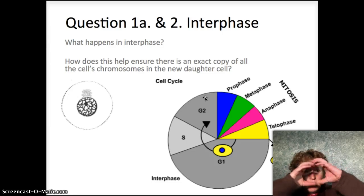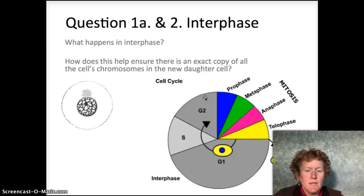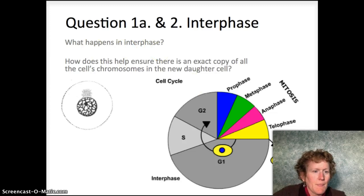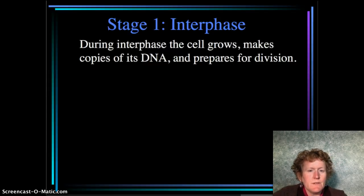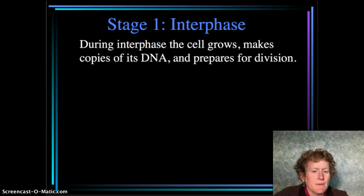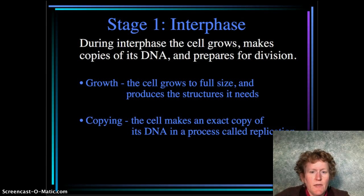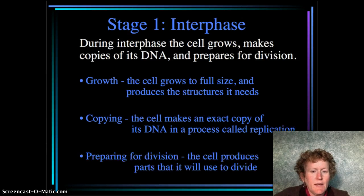If you're going to take one cell and split it into two cells, you need to make sure you have copies of everything, and that those copies are evenly distributed so everyone gets an exact copy. During interphase, the cell grows, makes copies of its DNA, and prepares for division. It copies all of the DNA and all of the organelles.